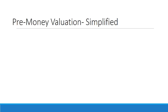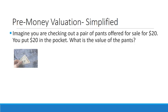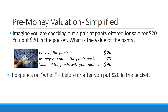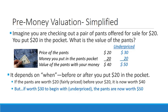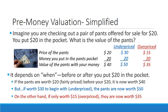Pre-money valuation simplified. Imagine you are checking out a pair of pants offered for sale for $20. You put $20 in the pocket. What is the value of the pants? Well, clearly it depends on when — before or after you put $20 in the pocket. If the pants were worth $20, they were fairly priced before your $20; they are now worth $40. But if they were worth $30 to begin with — in other words they were underpriced at $20 — the pants are now worth $50. On the other hand, if the pants were only worth $15, they were overpriced at $20, and they are now worth $35.